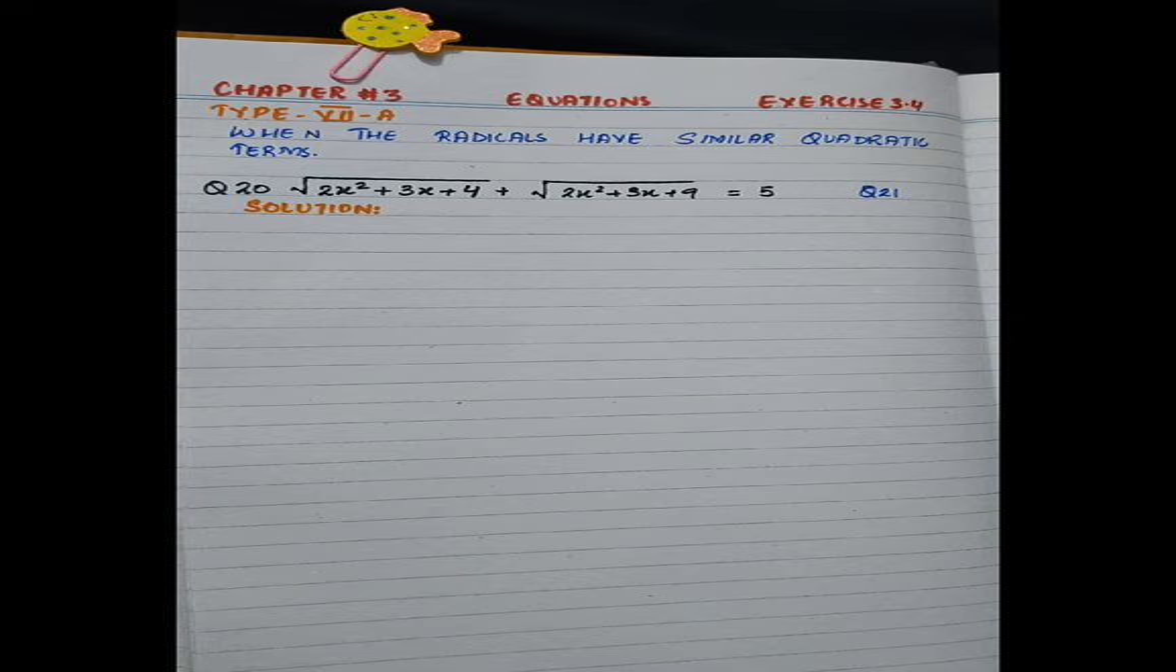Type 7a is when the radicals have similar quadratic terms. Question 20: √(2x²+3x+4) + √(2x²+3x+9) = 5.